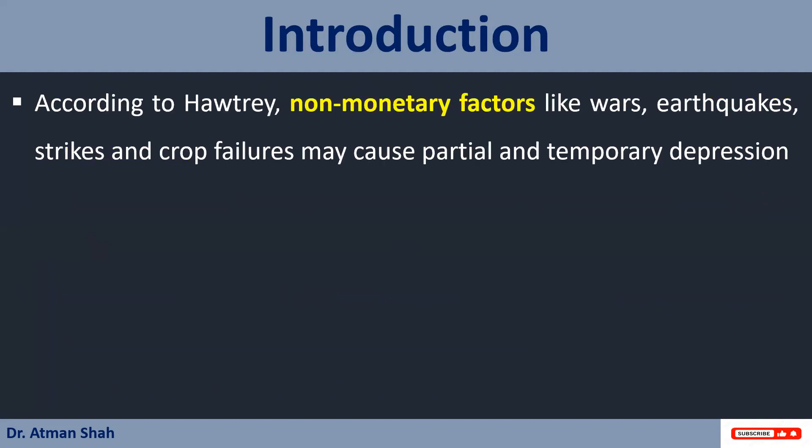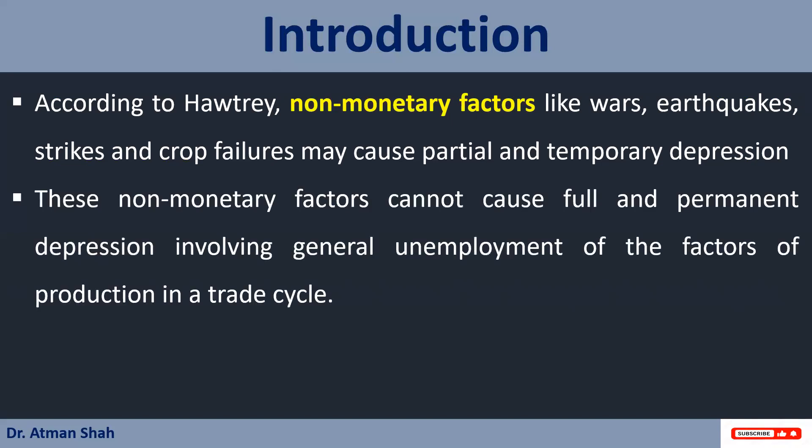So according to Hawtrey, non-monetary factors like wars, earthquakes, strikes, and crop failures may cause partial and temporary depression, and not the permanent depression which involves the general unemployment of the factors of production.